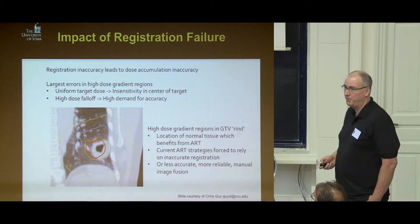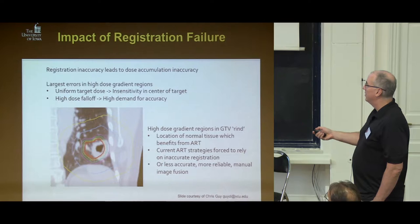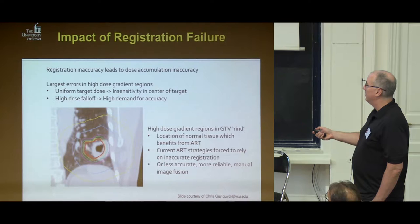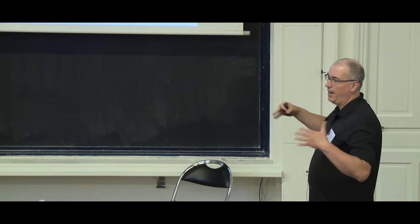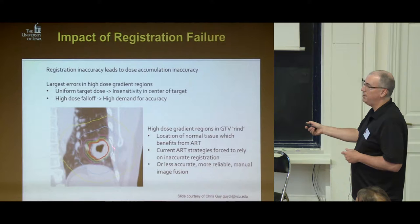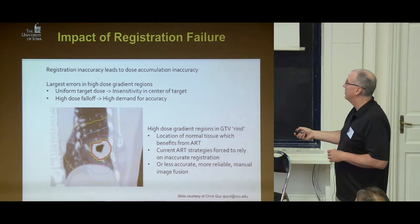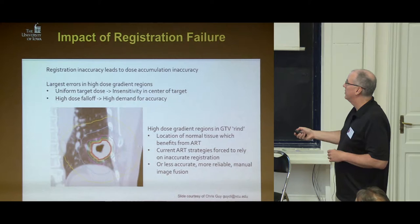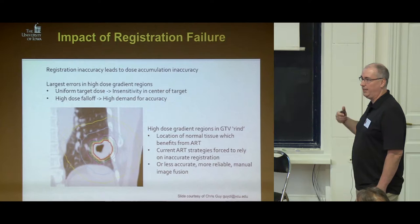This shows what happens if we do a bad job of registration. The red region shows the high dose region with a very steep fall-off. The way this works is you have a bunch of beams coming in from different directions, and where they overlap is this red region. We try to make the fall-off as steep as possible — deliver the dose to the tumor but spare all normal tissue. As soon as we're off by a little bit on our registration, we're giving a really high dose to normal tissue.